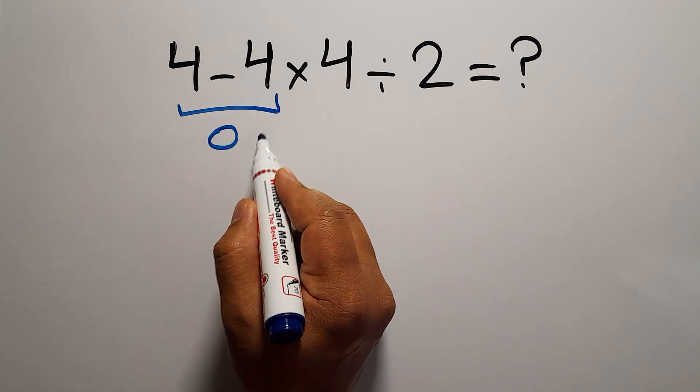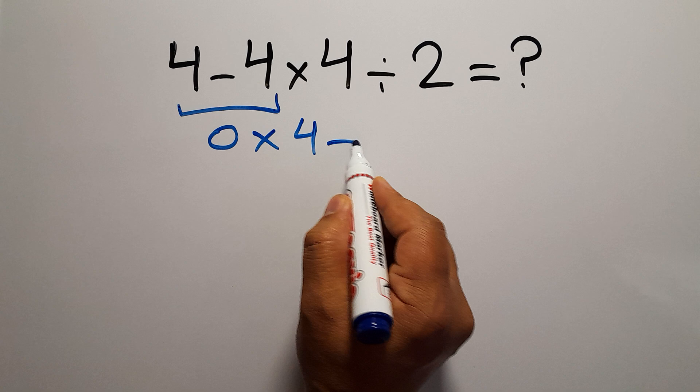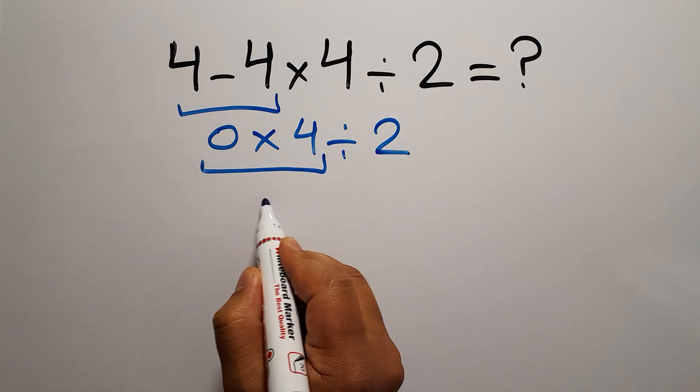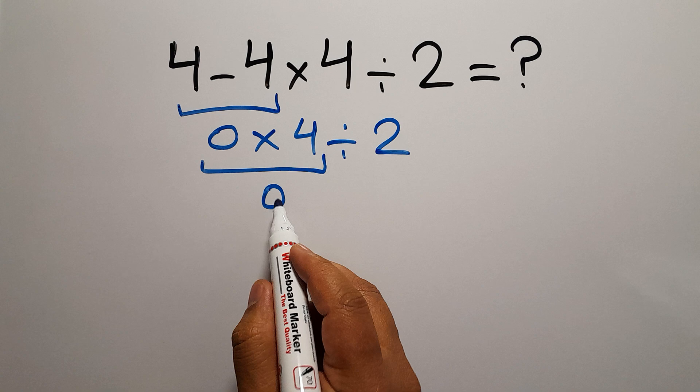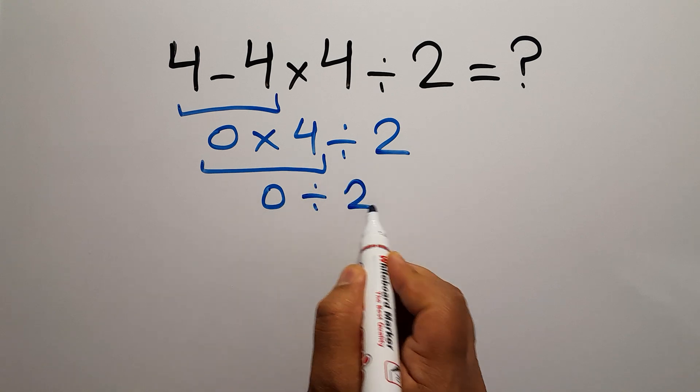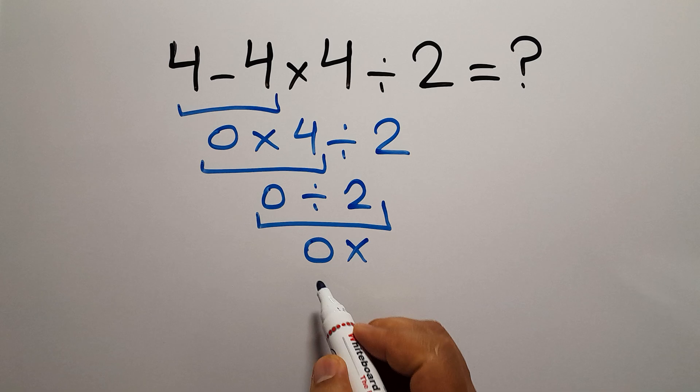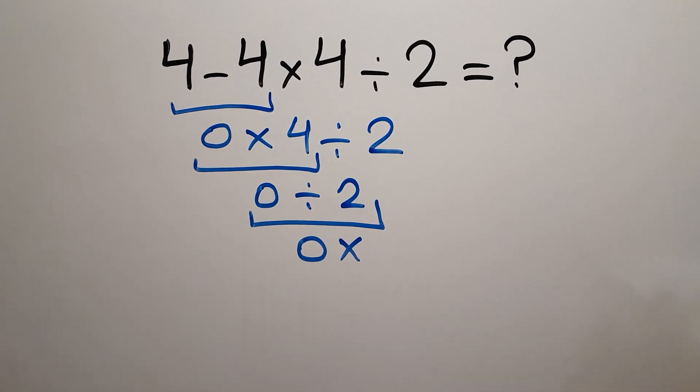So 0 × 4 ÷ 2. 0 × 4 gives us just 0, and 0 ÷ 2 equals 0. But this answer is not correct because according to the order of operations,